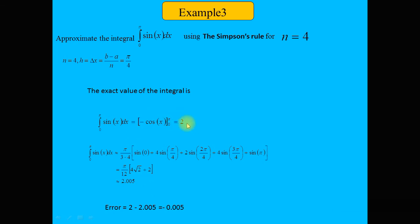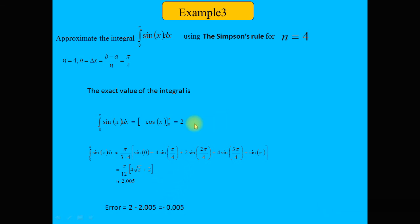The exact answer is 2 and the approximate answer is 2.0045. The error = exact answer − approximate answer = 2 − 2.0045 = −0.0045, so the absolute error is 0.0045. The exact and approximate answers are very close to each other, with a very small error.